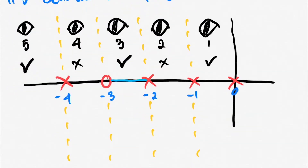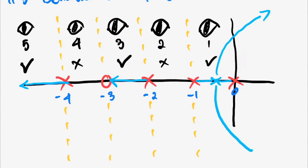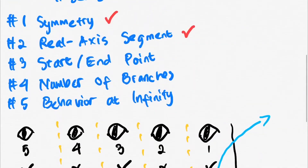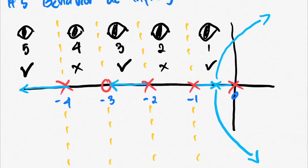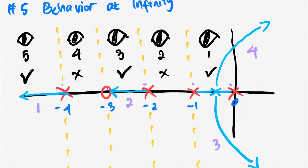Now let's check the start and end points. The root locus will move from the finite poles to zeros. Since there is only one finite zero, the other three poles will move toward infinity zeros. You can also see that there are four branches of root loci, which equals the number of poles.